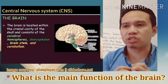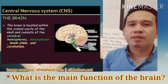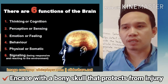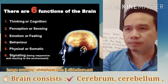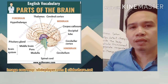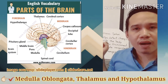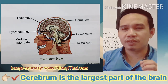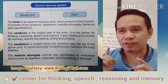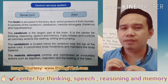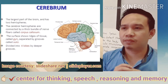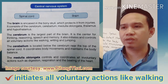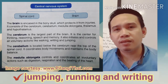The central nervous system consists of the brain and the spinal cord. The brain is encased in the bony skull which protects it from injuries. It consists of the cerebrum, cerebellum, medulla oblongata, thalamus, and hypothalamus. The cerebrum is the largest part of the brain and is the center for thinking, reasoning, speech, and memory. It also initiates and controls all voluntary actions like walking, writing, and jumping.